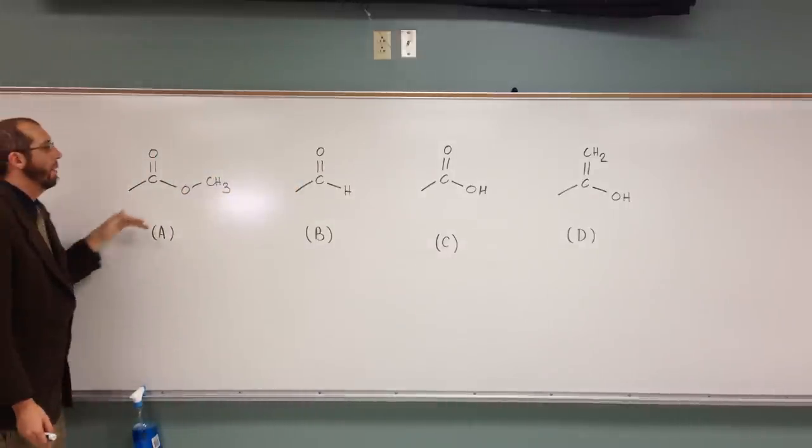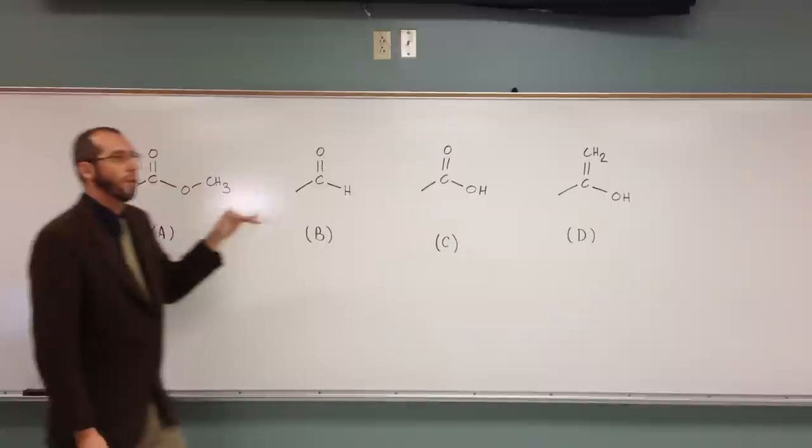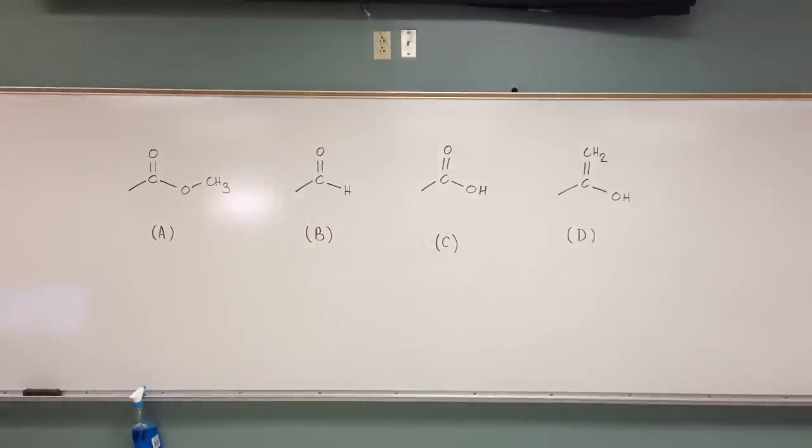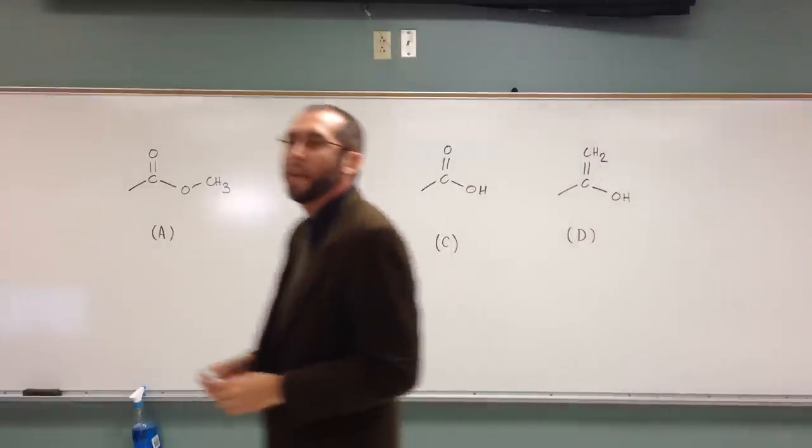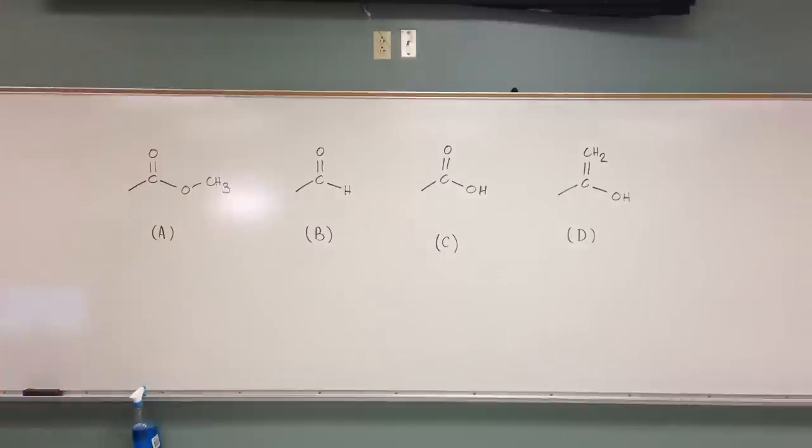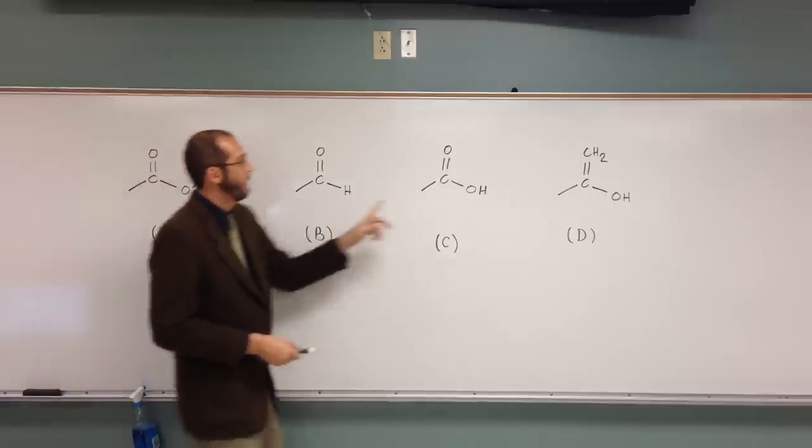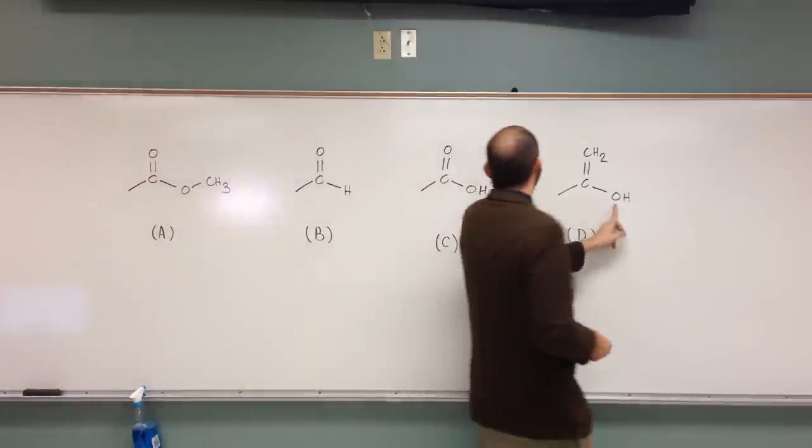From there, can anyone tell me which ones they can cross out immediately because they see that there's an atom that is of lower atomic weight than another atom? B. Okay, so why could we cancel out B? Because there's only a hydrogen, and in all the other ones, what do we have there? Oxygen.